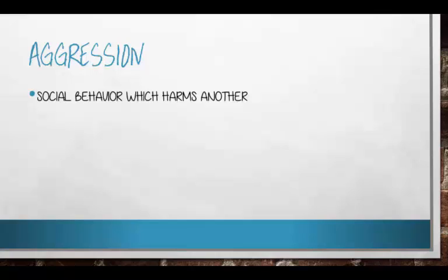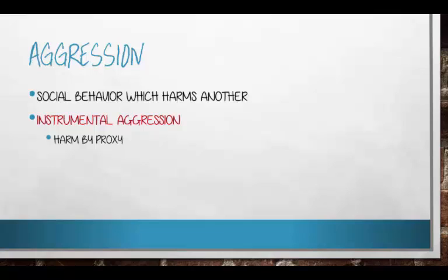There are two types of aggression, but I'm primarily going to focus on one. There is instrumental aggression — a type where you harm someone but that's by proxy; it wasn't your intent. Think of a child stealing a toy from another child who then falls down and hurts themselves. It's different from hostile aggression, where my action is specifically to hurt or harm you in some way. That's what we'll mainly focus on.